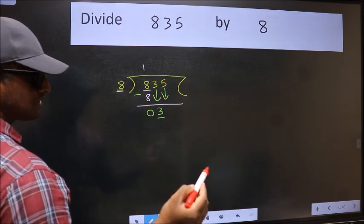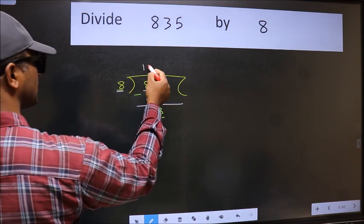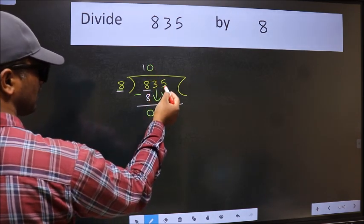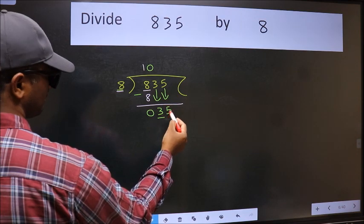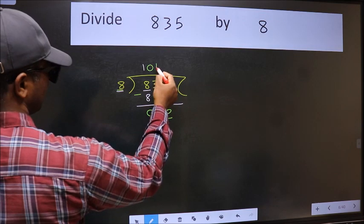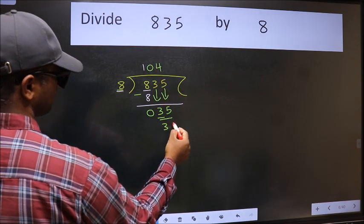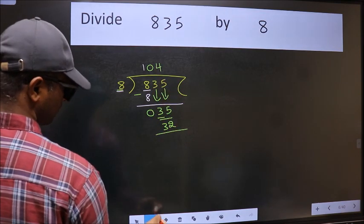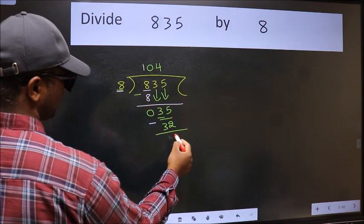The rule to bring down the second number is we should put 0 here. Then only we can bring this number down. Now 35. A number close to 35 in the 8 table is 8 fours 32. Now we should subtract. We get 3.